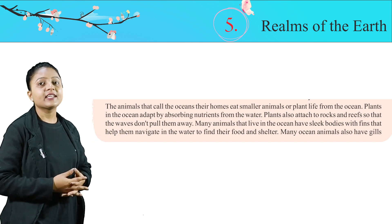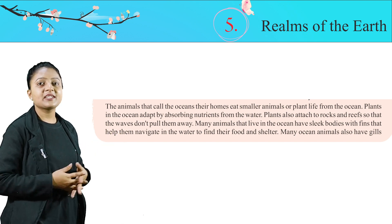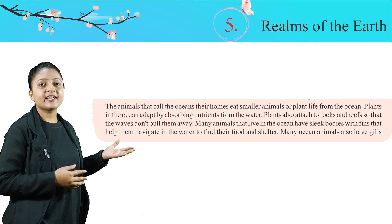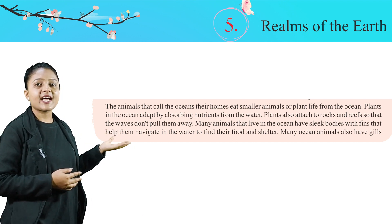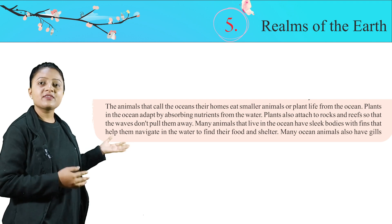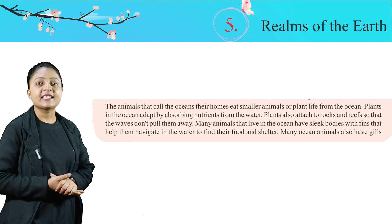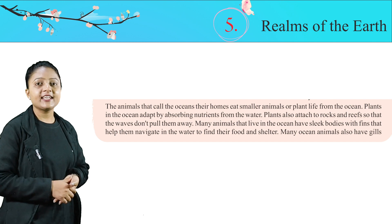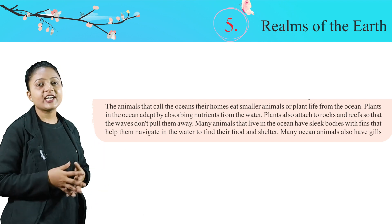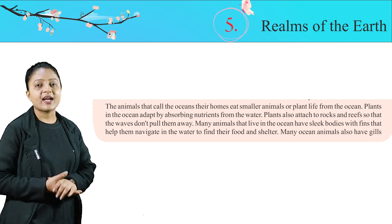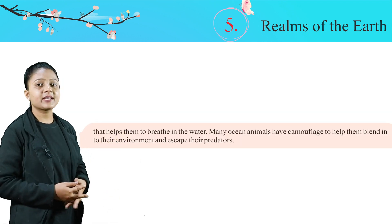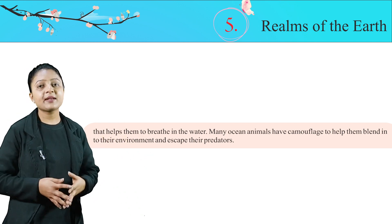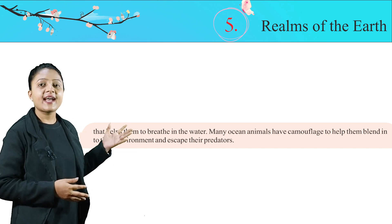The animals that call the ocean their home eat smaller animals or plant life from the ocean. Plants in the ocean adapt by absorbing nutrients from the water. Plants also attach to rocks and reefs so that the waves don't pull them away. Many animals that live in the ocean have sleek bodies with fins that help them navigate in the water to find their food and shelter. Many ocean animals also have gills that help them breathe in water. Many ocean animals have camouflage to help them blend into their environment and escape their predators.